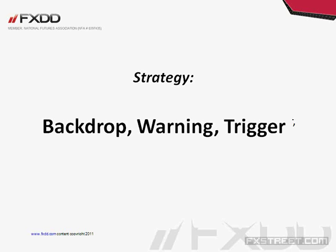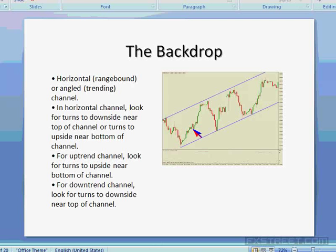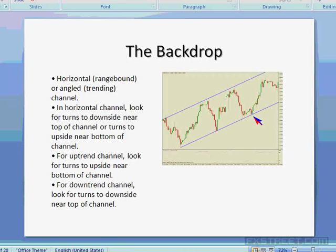Now for the strategy: we're looking for a backdrop, a warning, and a trigger. The backdrop is a channel — horizontal or angled. In this uptrend channel illustration I am biased to the upside and will only be taking long trades near the bottom of the channel. In a horizontal channel there is no bias — I'll go long near support or short near resistance. In a downtrend channel I only look for shorts near resistance.